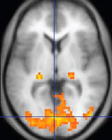Hydrogen has the most frequently imaged nucleus in MRI because it is present in biological tissues in great abundance, and because its high gyromagnetic ratio gives a strong signal. However, any nucleus with a net nuclear spin could potentially be imaged with MRI. Such nuclei include helium-3, lithium-7, carbon-13, fluorine-19, oxygen-17, sodium-23, phosphorus-31, and xenon-129. Sodium-23 and phosphorus-31 are naturally abundant in the body, so can be imaged directly. Gaseous isotopes such as helium-3 or xenon-129 must be hyperpolarized and then inhaled as their nuclear density is too low to yield a useful signal under normal conditions.